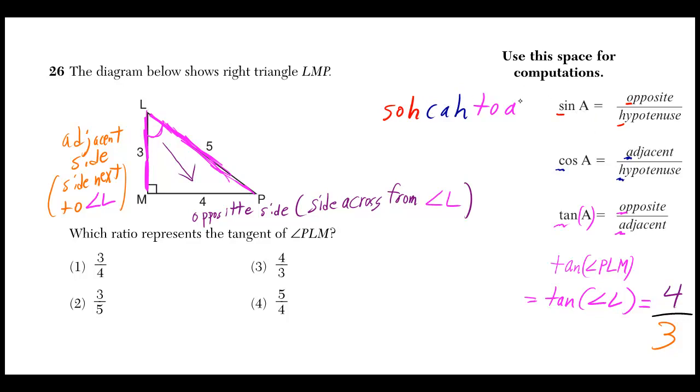It's called SOH-CAH-TOA. The SOH comes from the sine formula, the CAH comes from the cosine formula, and the TOA comes from the tangent formula.